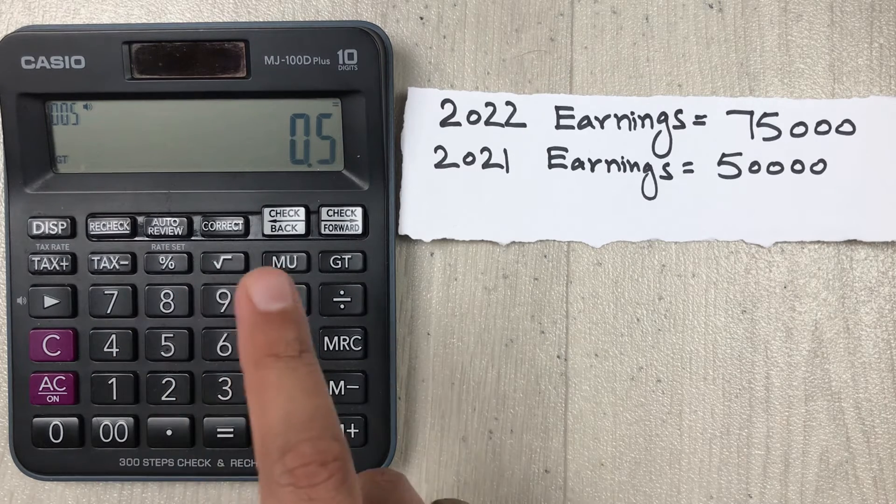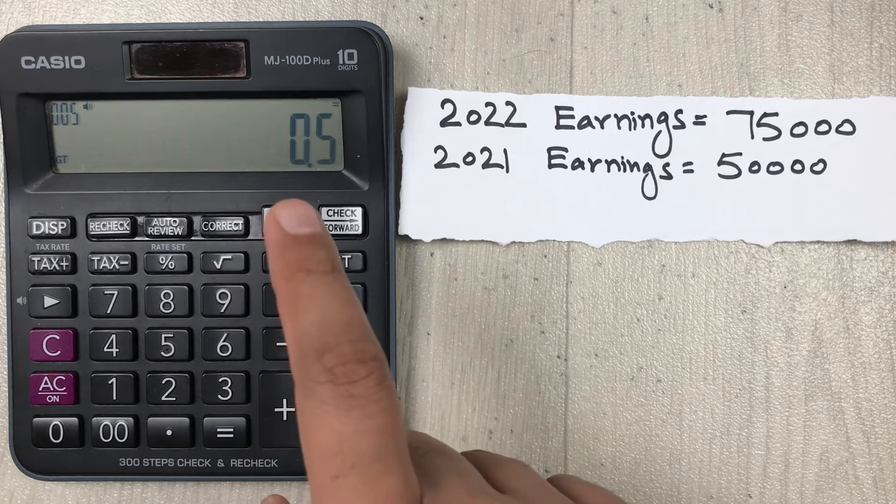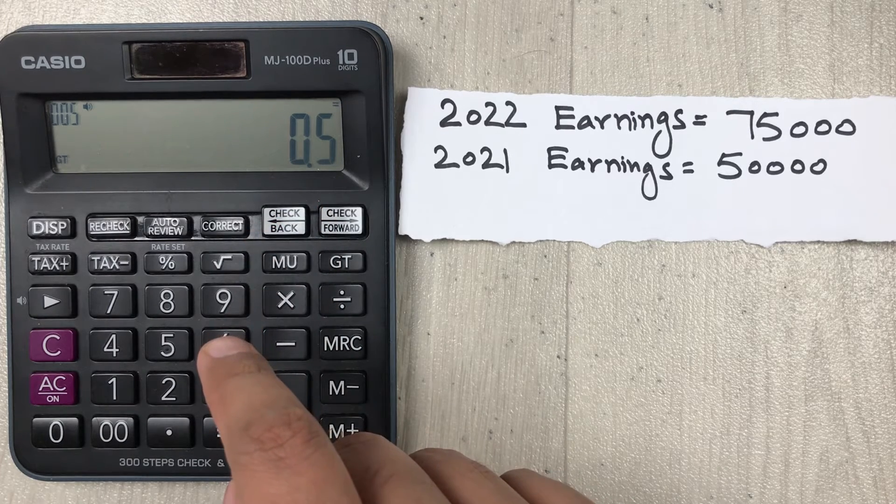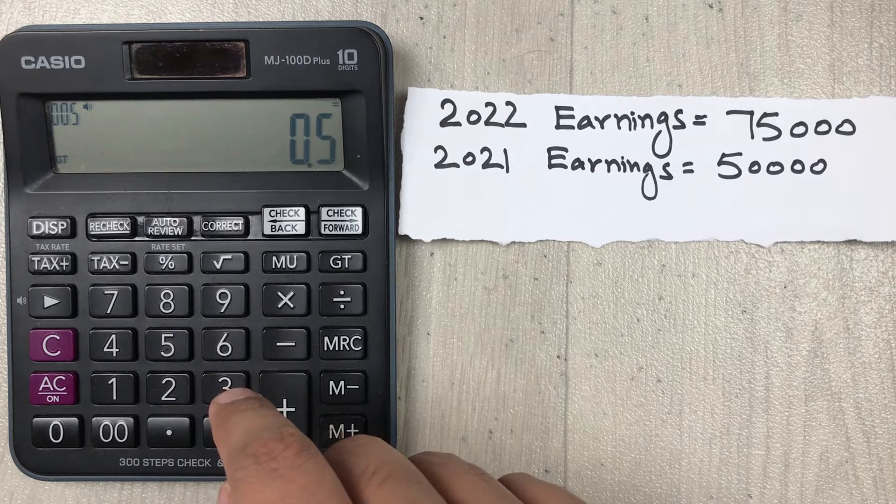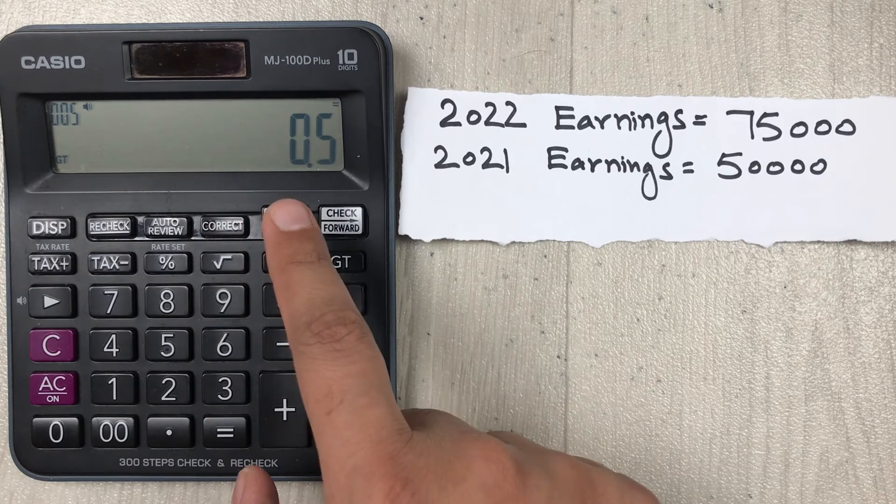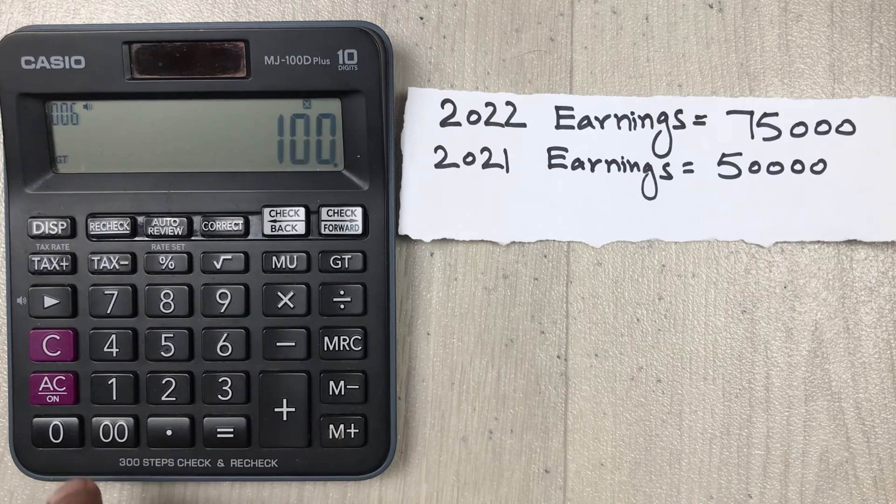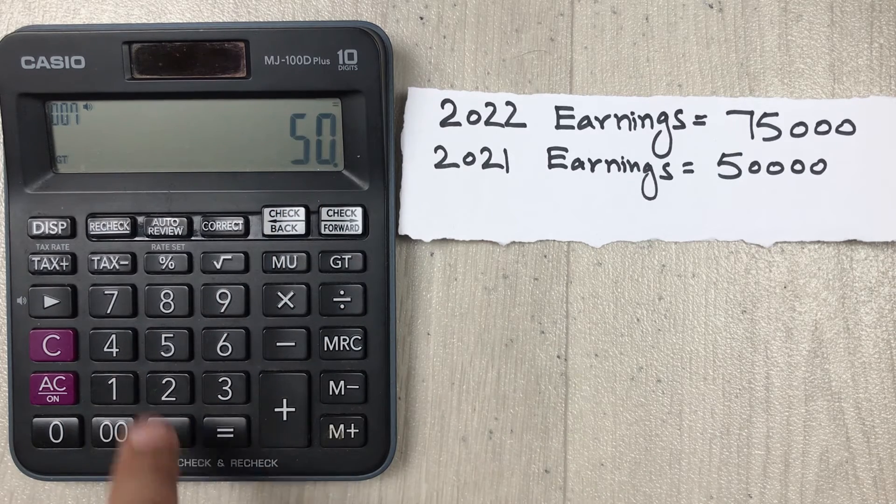And then in the third step, we will multiply this 0.5 with 100, because we want our answer in the percentage form. So we multiply this 0.5 with 100, and then we press the equal button.